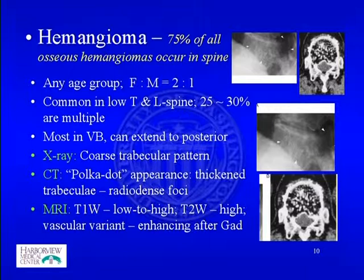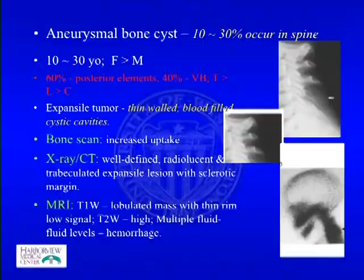Hemangioma accounts for 75% of all osseous hemangiomas occurring in the spine and can happen at any age group with female predominance. It commonly occurs at the lower thoracic or lumbar spine, with about 20 to 30% being multiple lesions. As discussed, most occur in the vertebral body, though sometimes they can extend to the posterior elements.